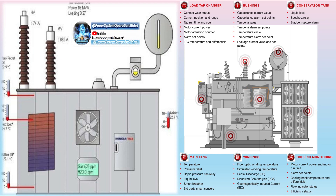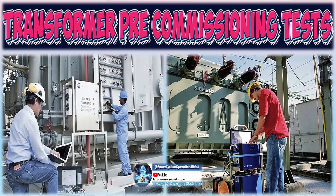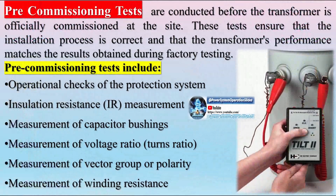Periodic or condition monitoring tests are conducted to enhance performance and regularly assess the condition of transformers. These tests ensure that the transformer continues to meet customer requirements and are performed on-site at regular intervals, such as weekly, monthly, or annually. The frequency depends on the type of transformer and its usage. These tests help detect faults at an early stage by continuously monitoring the transformer's performance. For example, if the insulation resistance measurement falls below the normal value, it indicates that a defect may be developing. Regular monitoring allows for timely maintenance and prevents major failures.